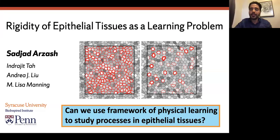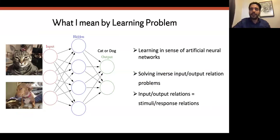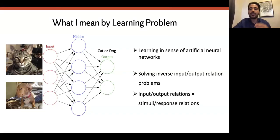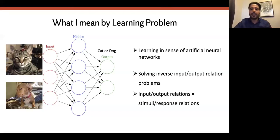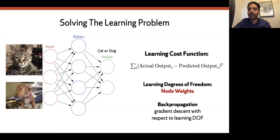For that, I'm going to talk about what I mean by learning. We're living in the era of AI — many of you have been using ChatGPT in your research or life. That's what I mean by learning: artificial neural network systems that solve inverse input-output relation problems. In biological systems, I'm thinking of input-output relations in terms of stimuli and response relations.